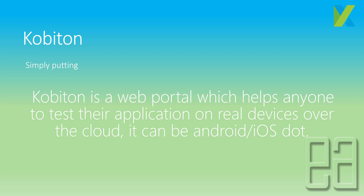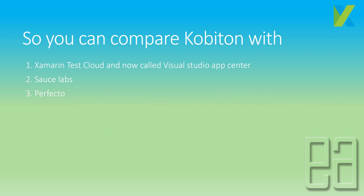Simply put, Kobiton is a web portal which helps anyone to test their application on real devices or the cloud — either Android or iOS. You can compare Kobiton with Xamarin Test Cloud, Visual Studio App Center, Sauce Labs, or Perfecto Mobile. All of these do pretty much the same thing, but Kobiton's platform is easy to use because they have their own infrastructure built with Katalon Studio, and it's very easy to configure and get started.